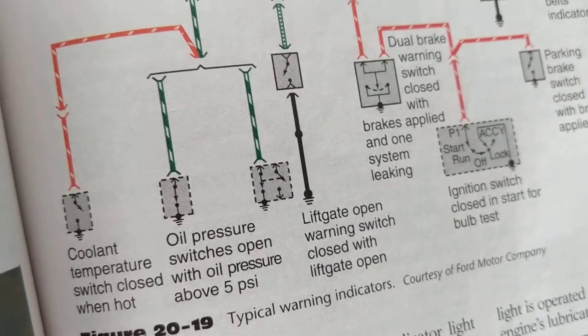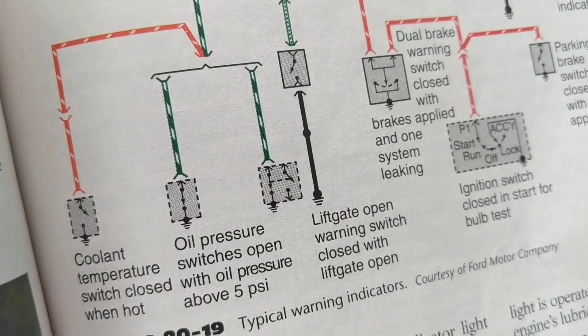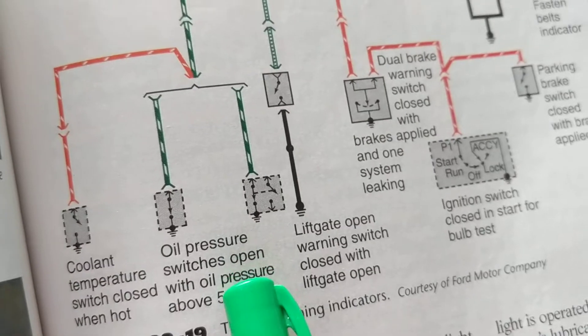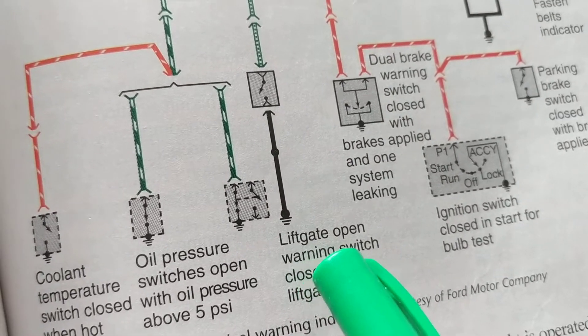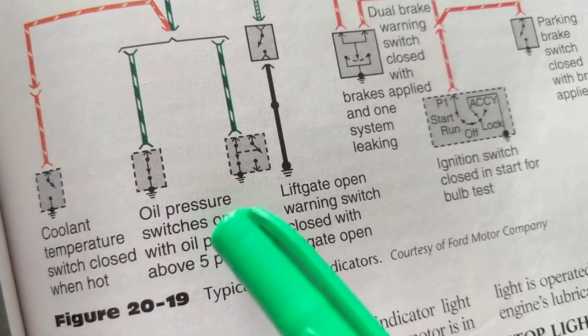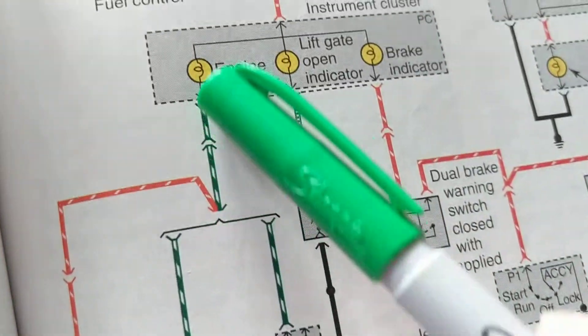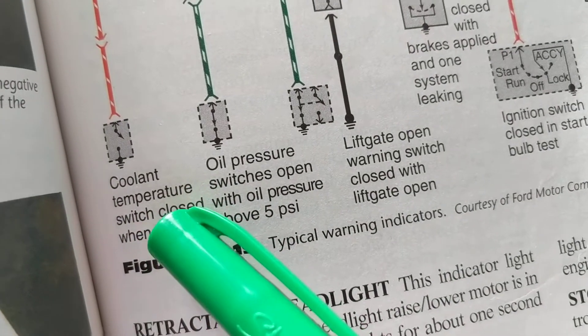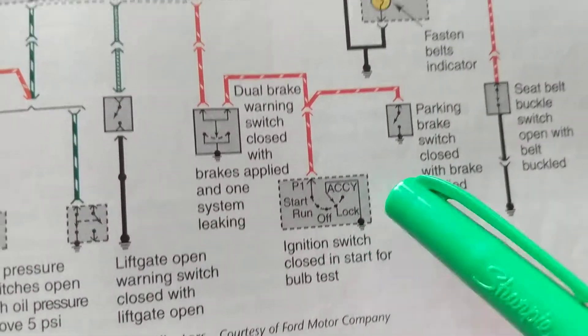It's called the warning system - it's warning you about something. It's not going to warn you that the air conditioning is not working because that's a luxury, but oil in the engine is a necessity. When the oil pressure is beneath a certain amount, this closes and gives a ground and lights the bulb. Same thing for the coolant temperature switch - it closes when hot, gives it a ground, and lights the bulb.